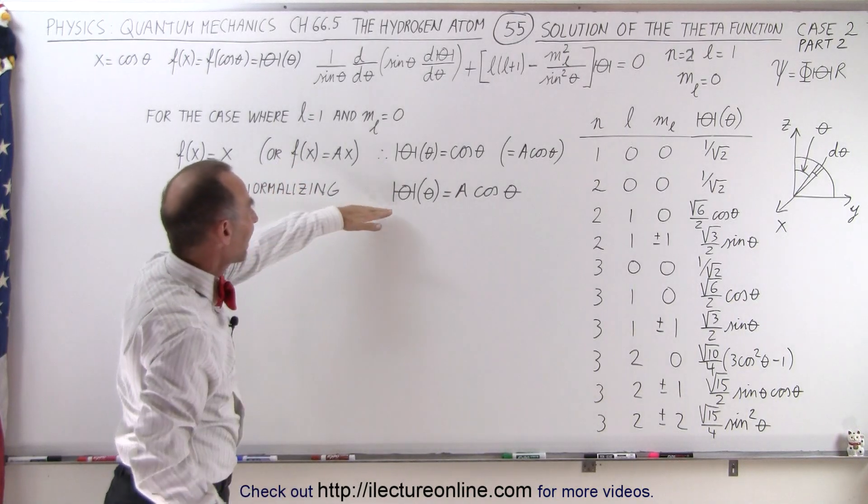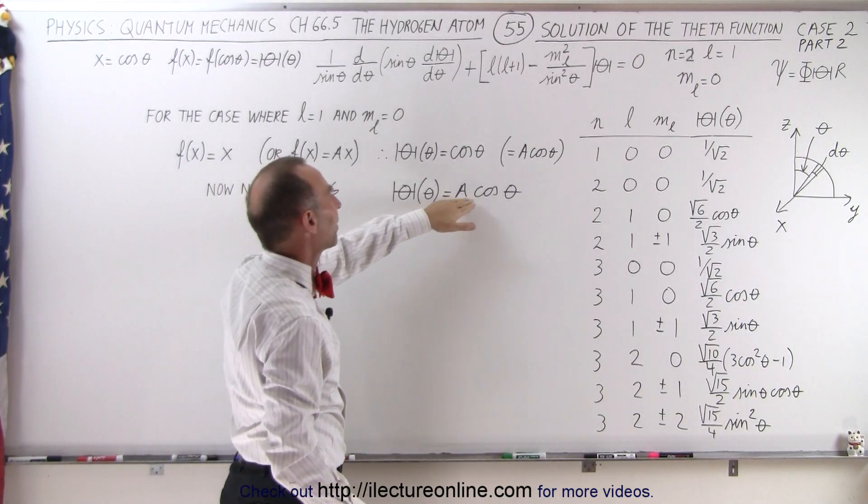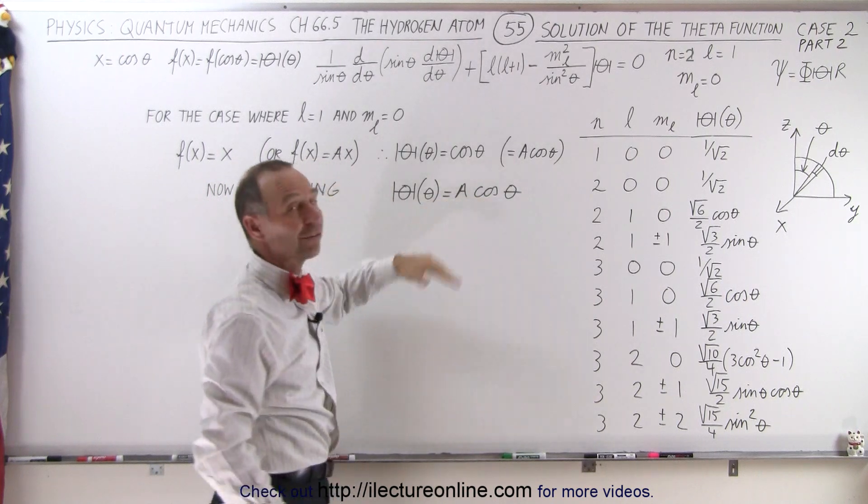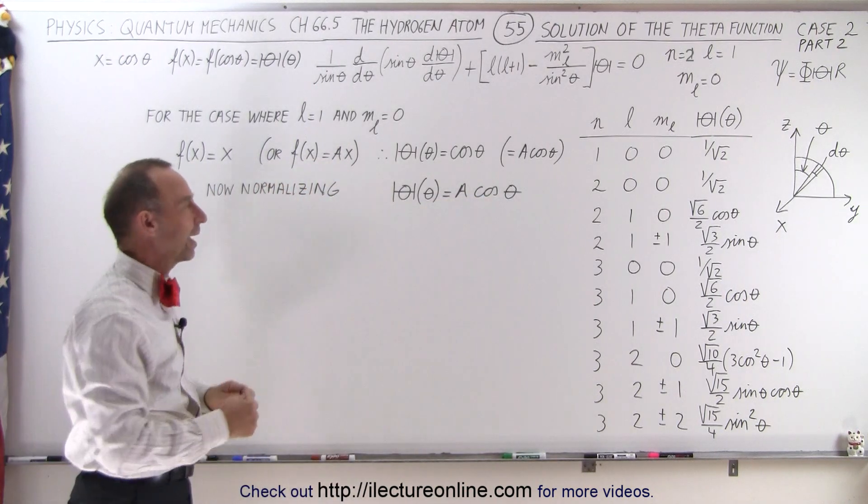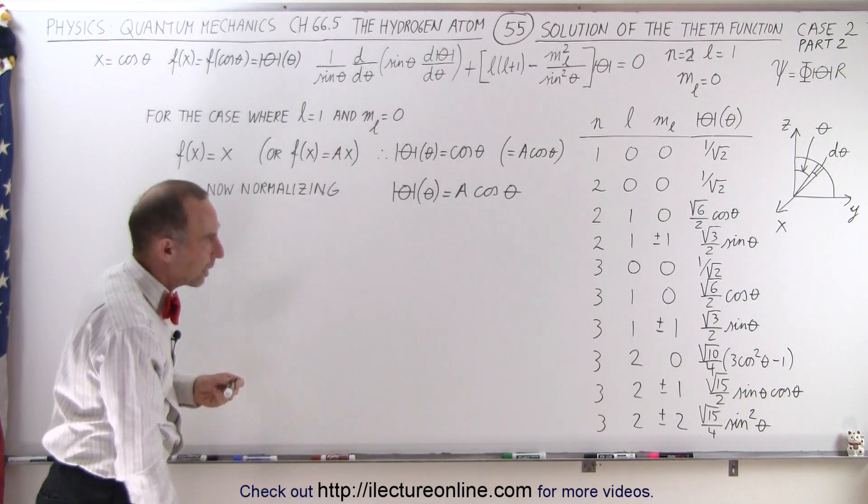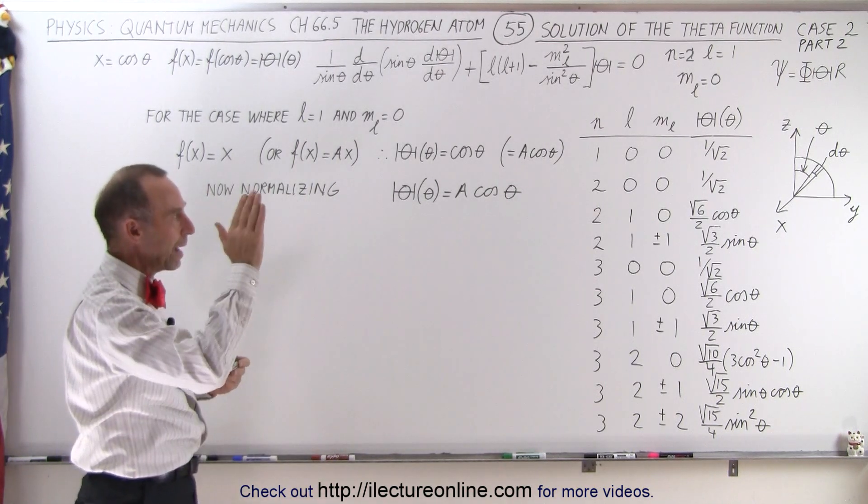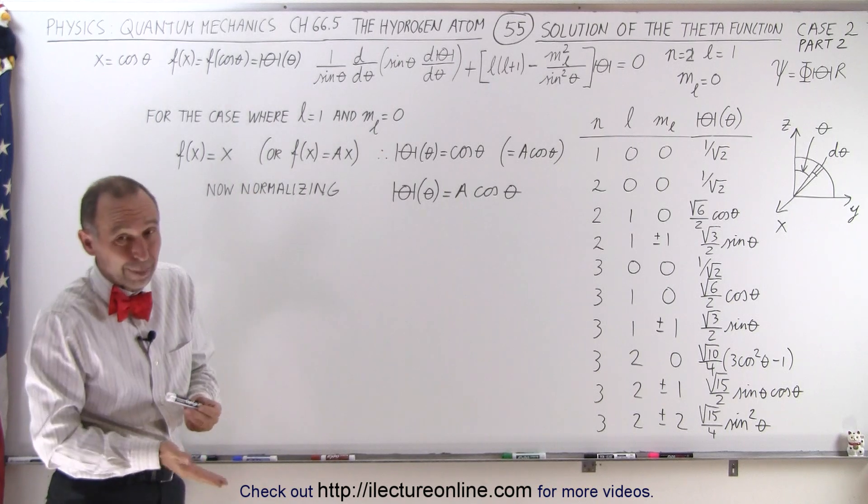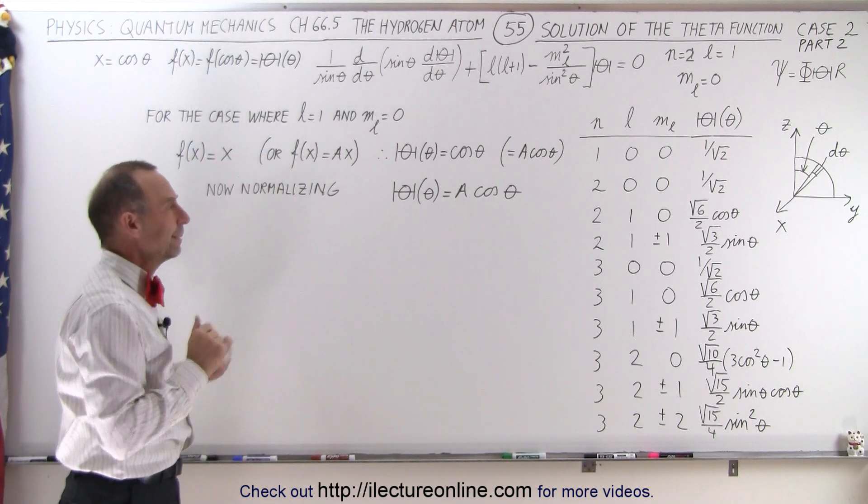And so we found that the solution to the theta function is equal to a times the cosine of theta. Now we need to find the value of our a, so we have to normalize that, which means that if we then integrate over the entire range of motion from zero to pi, or I should say from negative pi over two to positive pi over two.